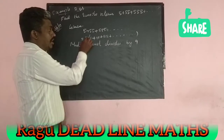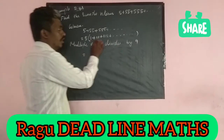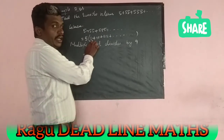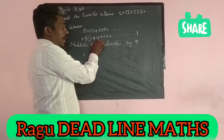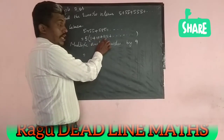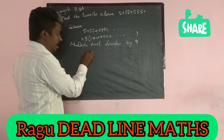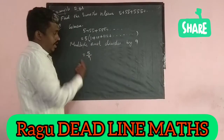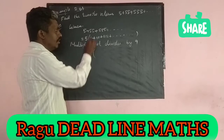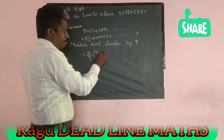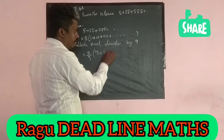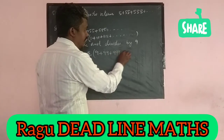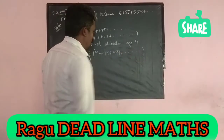If you multiply all the terms by 9: 1 times 9 is 9, 11 times 9 is 99, and so on. Then divide by 9. So you get 9 plus 99 plus 999 plus etc.